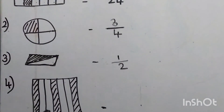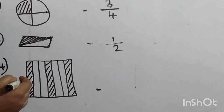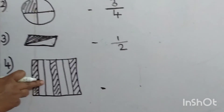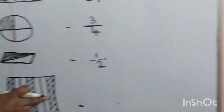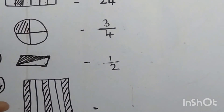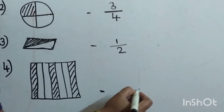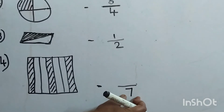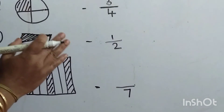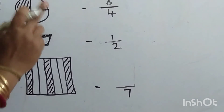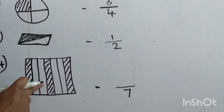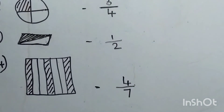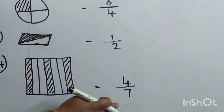Let's move on to the next one and count the total number of parts: 1, 2, 3, 4, 5, 6, 7 — total parts are 7, which goes in the denominator. Now counting the unshaded parts: 1, 2, 3, 4 — four parts are unshaded. So the fraction is 4 by 7.